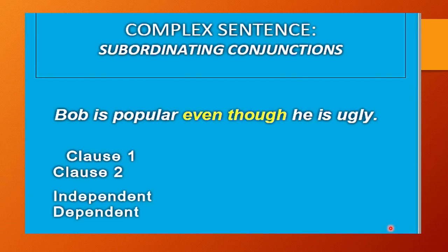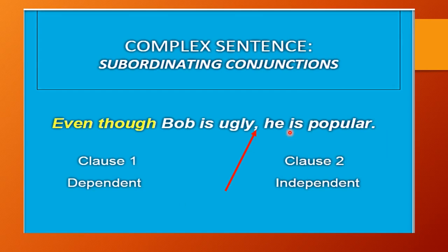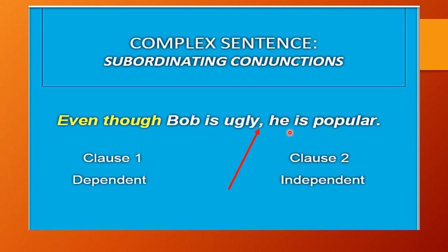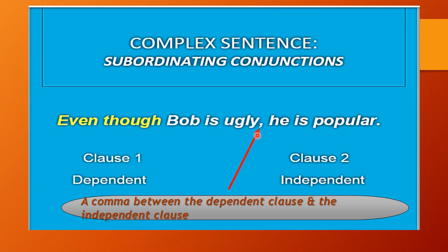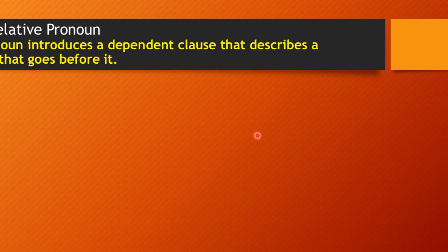The subordinating conjunction can come in the middle of the sentence, or sometimes at the beginning, but if it comes at the beginning I have to put a comma to separate the dependent clause from the independent clause.